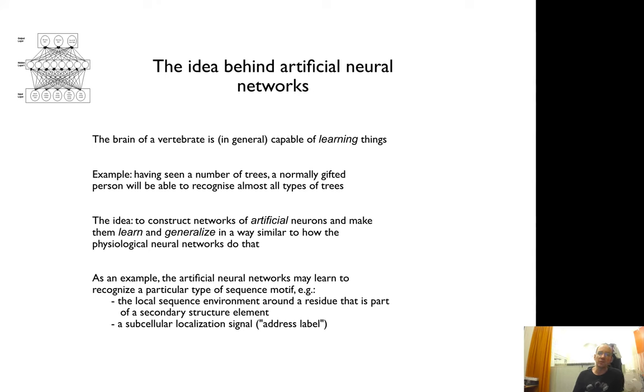The idea here is basically we want to emulate the capability of a brain and its ability to learn things. As you know, any normally gifted person can, given a few trees, learn to recognize a tree. So the idea is to create artificial neural networks and make them learn and generalize in the same way.